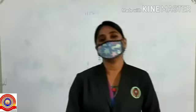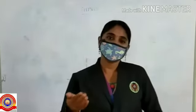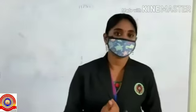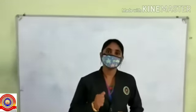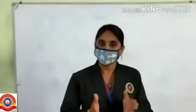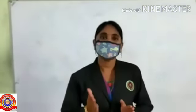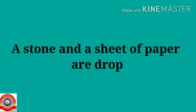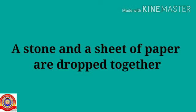Hello, my dear friends, welcome back to the physics class. In the previous class we discussed about acceleration due to gravity. Today we are discussing another topic of this chapter. Let's start with a small question: a stone and a sheet of paper are dropped together — which of them will reach the ground first? Yes, the stone reaches first; objects like paper fall slowly.